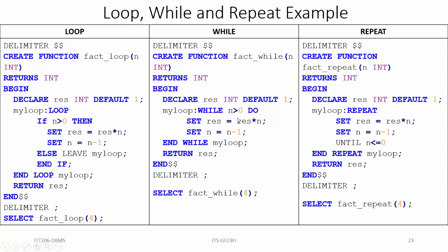In the case of while, when the condition is true the body executes. But in the case of repeat, the condition after 'until' is checked after execution, and when it becomes true the loop exits. After writing all statements in repeat, we close with 'end repeat my_loop' semicolon. That's how we write loop, while, and repeat statements. Try out these examples in MySQL. Thank you.